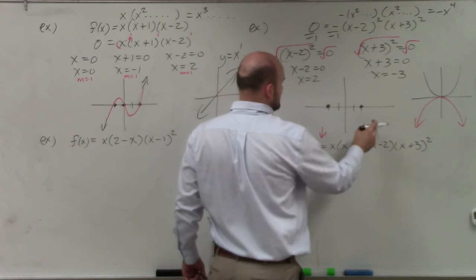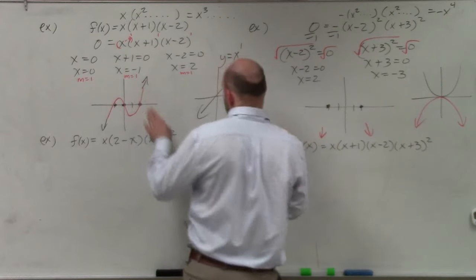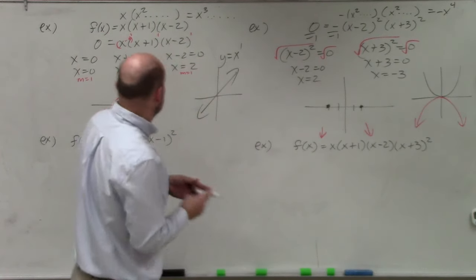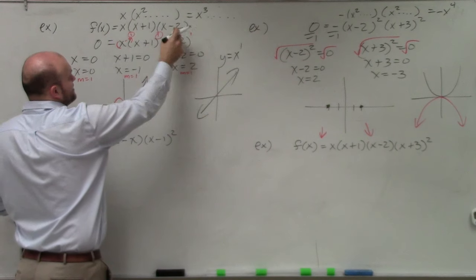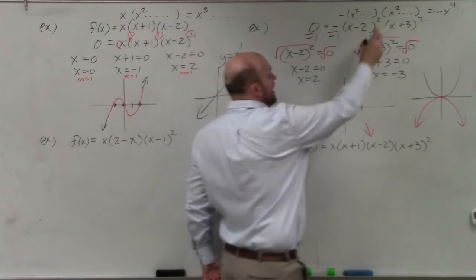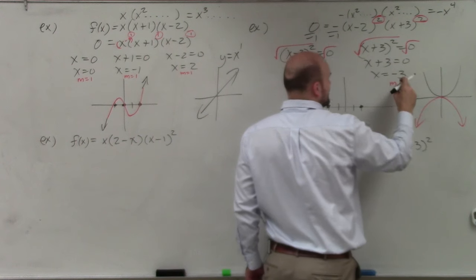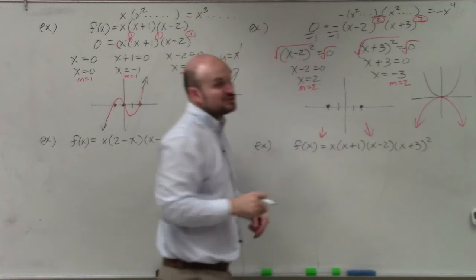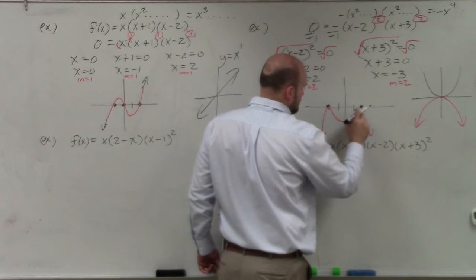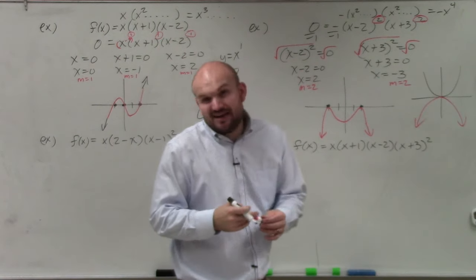Now, are we just crossing the zeros like in the last problem? No, because the multiplicity is different. In the previous problem the power of the factors was 1 — odd — so the graph crossed. Here, the power of each factor is 2, so the multiplicity equals 2. That means the zeros do not cross but actually bounce. My graph would look something like that, and you can use graphing technology to verify.